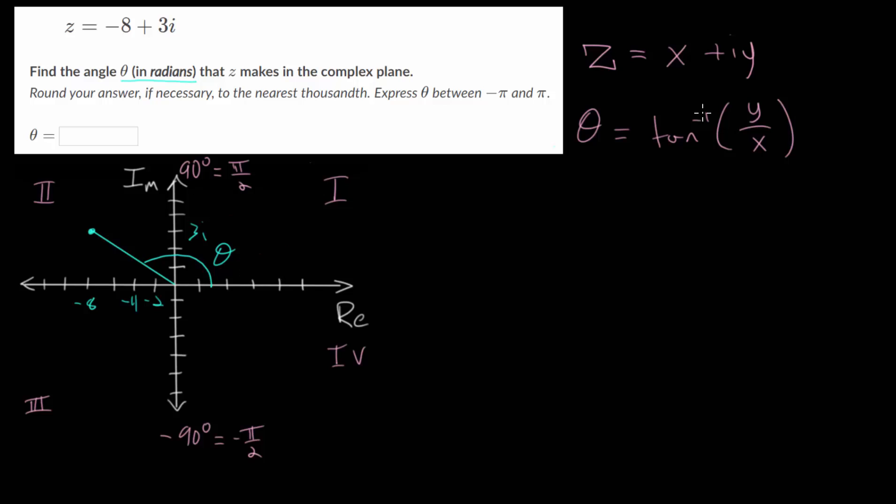Now, to find this angle theta, we can apply this formula, and then we just need to be a little bit careful. So let's plug in the imaginary part and the real part. We have that theta is equal to the inverse tangent of the imaginary part, which is 3, divided by the real part, which is minus 8. And I should mention that this angle for complex numbers is often called the argument. So you might see this written as the argument of the complex number z.